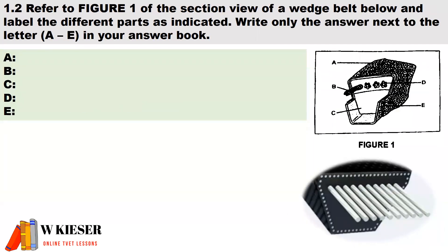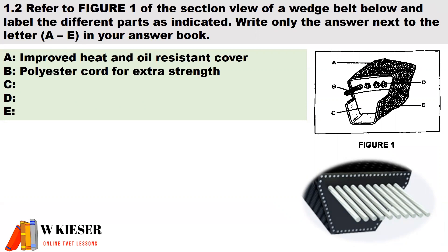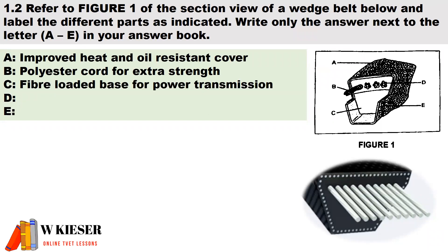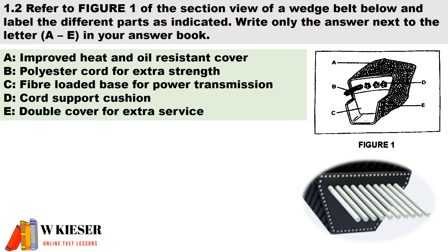In question 1.2, looking at the figure provided — a section view of a wedge belt — we need to name the different parts as indicated in the diagram. Part a is the improved heat and oil resistant cover. Part b is the polyester cord for extra strength. Part c is the fiber loaded base for power transmission. Part d is the cord support cushion. Part e is the double cover for extra service.